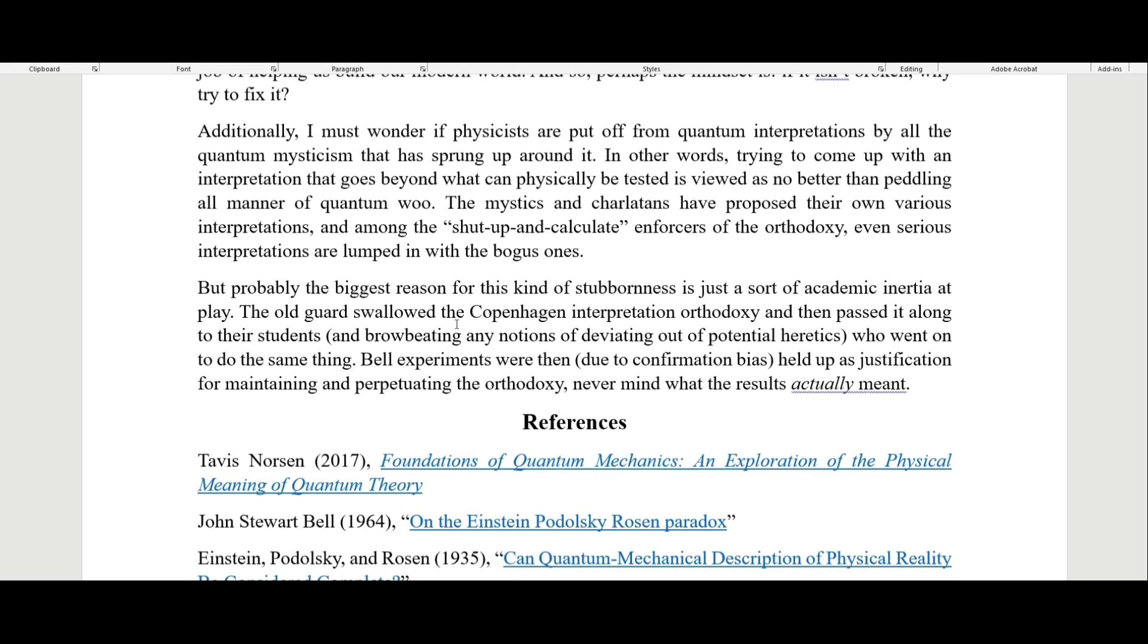But what I think is probably the biggest reason for this kind of stubbornness is just a sort of academic inertia at play. The old guard swallowed the Copenhagen interpretation orthodoxy, and then they passed it along to their students and browbeat any notions of deviating out of potential heretics, who then went on to do the same thing to their own students. Bell experiments were then, due to confirmation bias, held up as justification for maintaining and perpetuating the orthodoxy, never mind what the results actually meant.